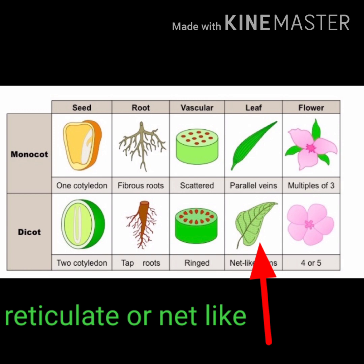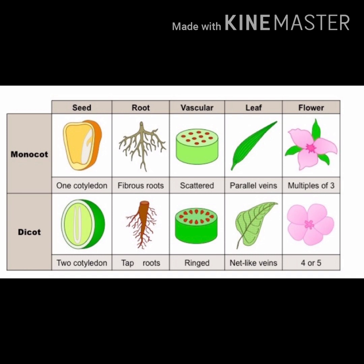For leaves: dicotyledonous plants have reticulate venation, meaning the veins in the leaf are scattered in a very fine network pattern. Monocotyledonous plants have parallel venation — the leaves are narrow with just a few parallel lines or margins visible. Diagrams are provided so you can clearly understand reticulate versus parallel venation.